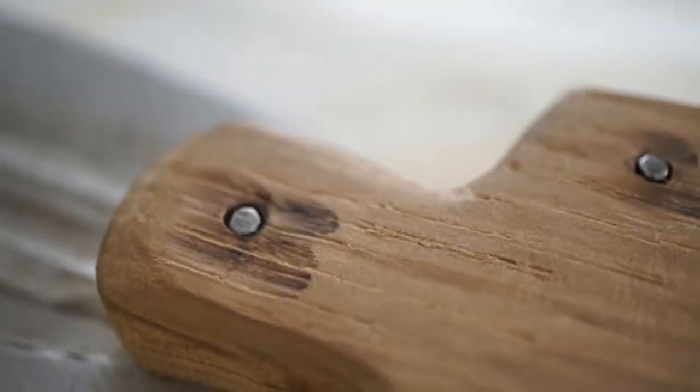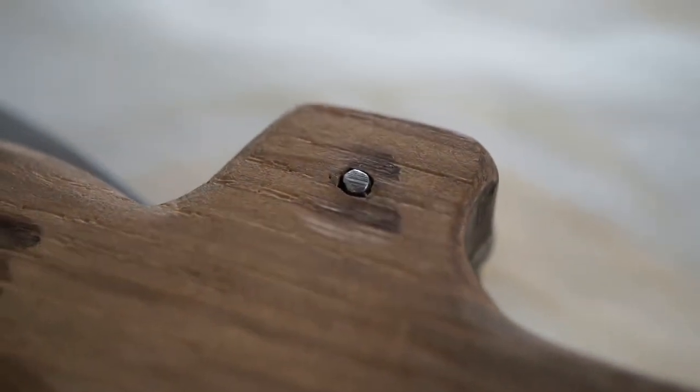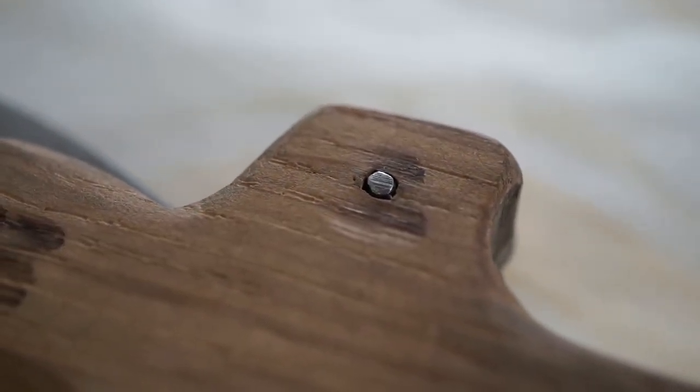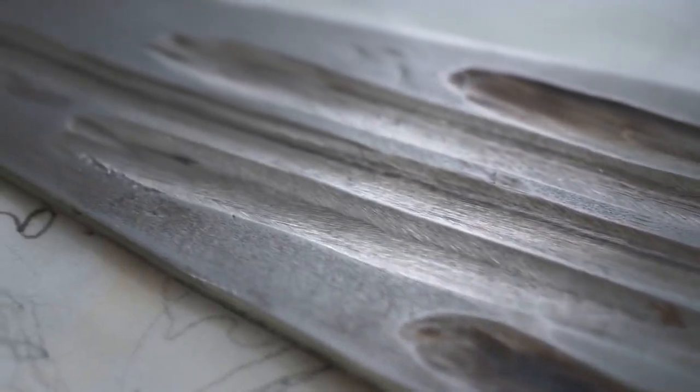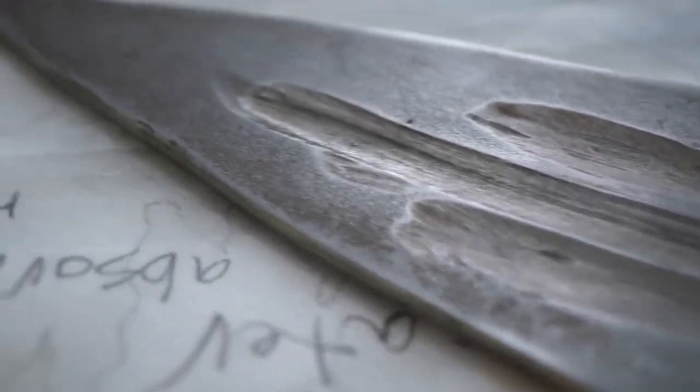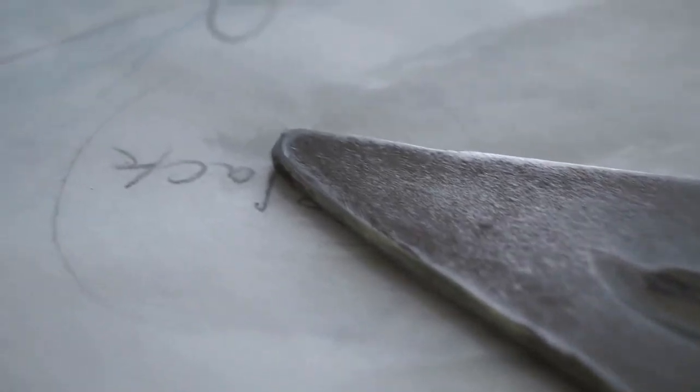Those are just drywall screws. I was going to use rivets because that's how you traditionally do a handle, but rivets have two drawbacks. One is you can't take them out very easily, and the other is I didn't have any rivets on hand but I did have drywall screws. So that's what I used. Thanks for joining me.